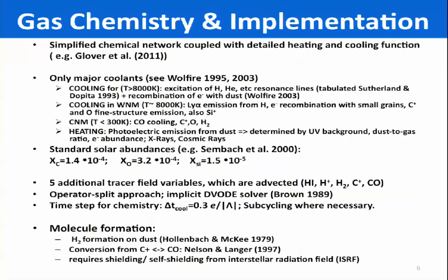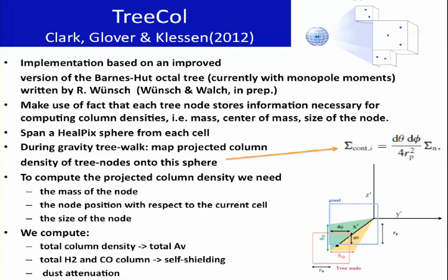There's also subcycling if necessary — it's necessary when the cooling time is short compared to the dynamical time, so we allow for subcycling in the chemistry. In order to follow molecule formation, molecules have to be shielded from the interstellar radiation field. Normally UV radiation comes from the outside, and if you are inside a molecular cloud you need to be deeply embedded in order to not be dissociated as a molecule. So we need to follow that in order to follow molecule formation, and therefore we implemented the TreeCOL method in the Barnes–Hut octal tree which we already had.